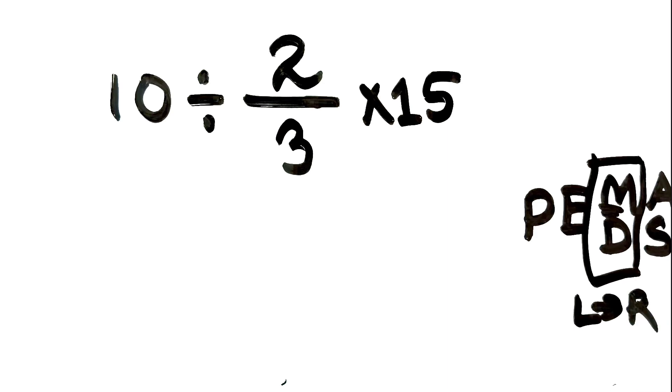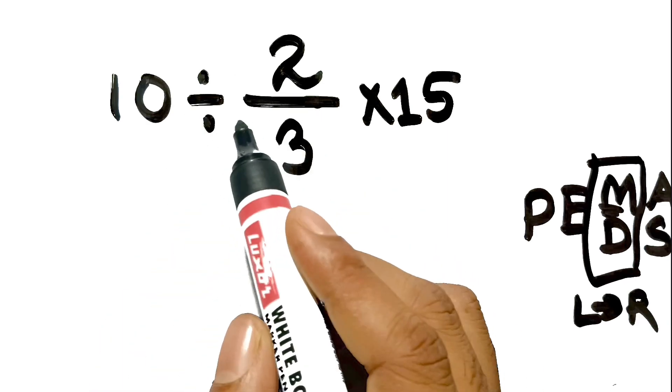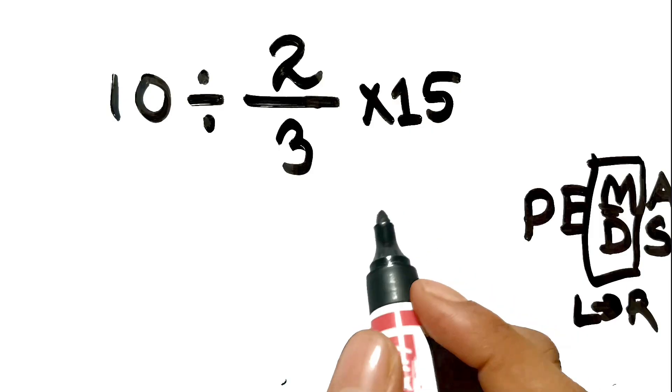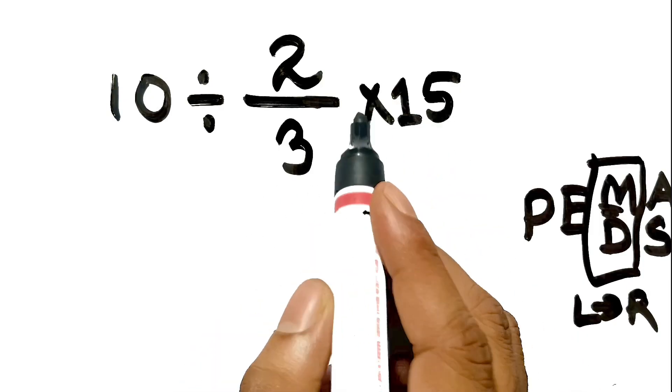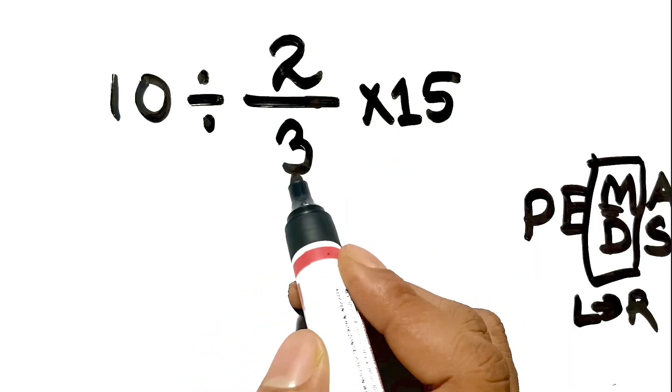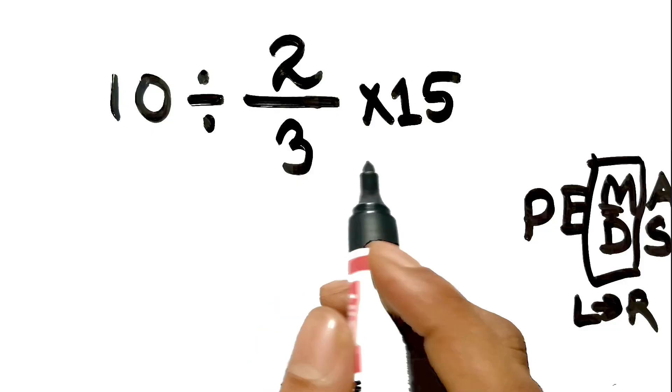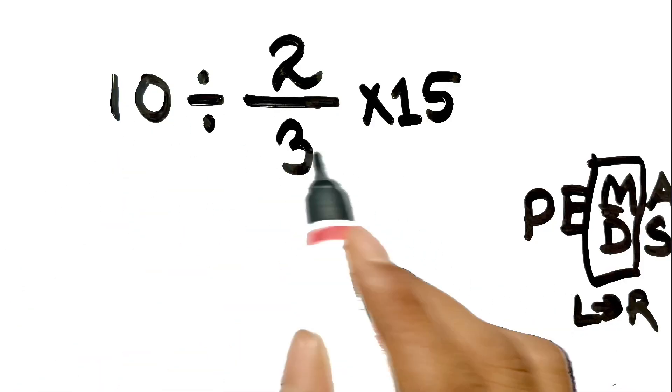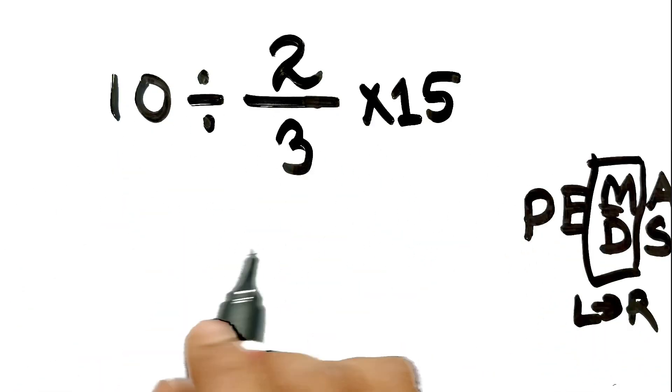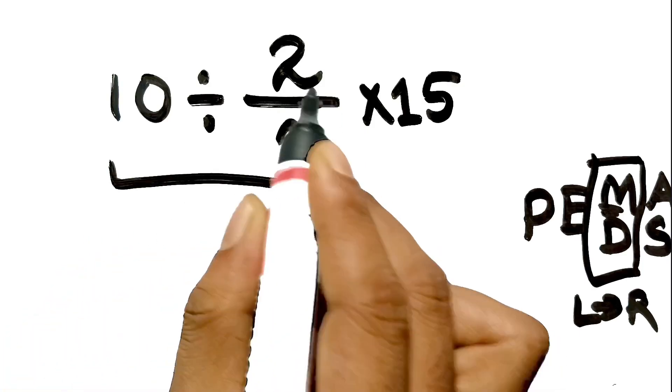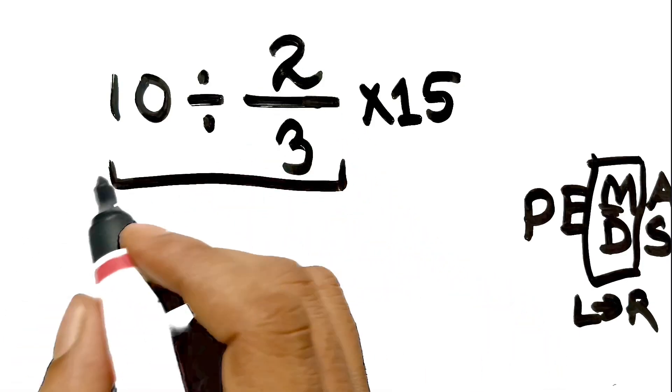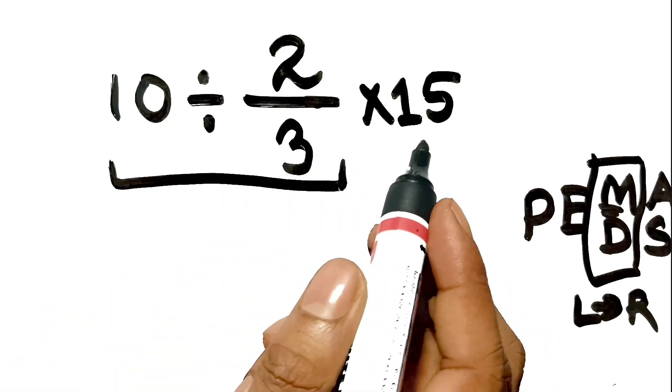In this expression, we have a division involving a fraction followed by a multiplication. The trap is assuming the multiplication belongs to the fraction, but it does not. We must solve the operations in the order they appear from left to right. The first operation is 10 divided by the fraction 2 thirds. We cannot touch the 15 yet.